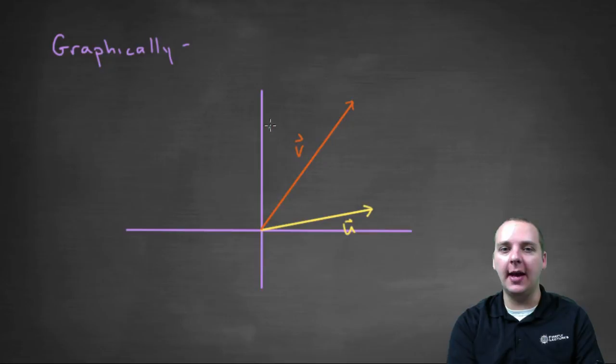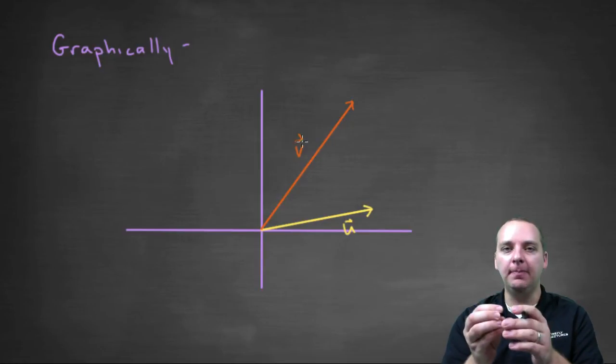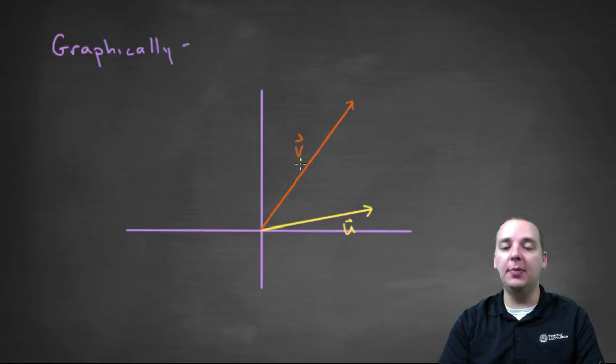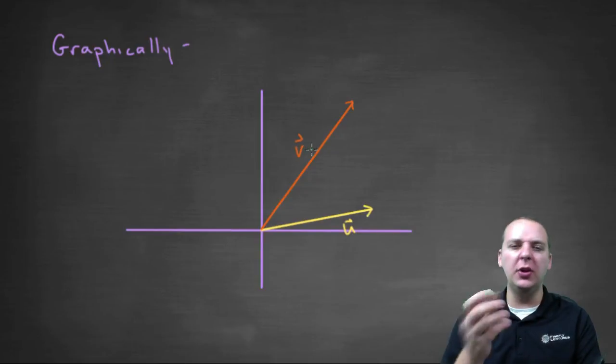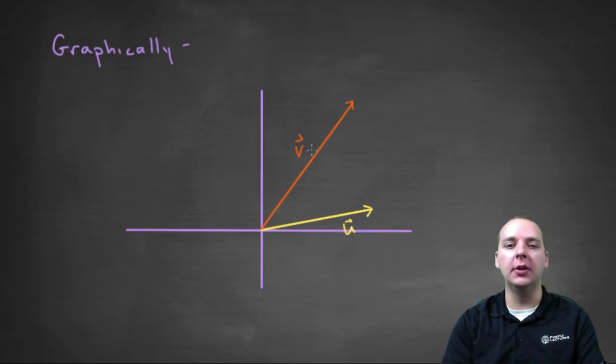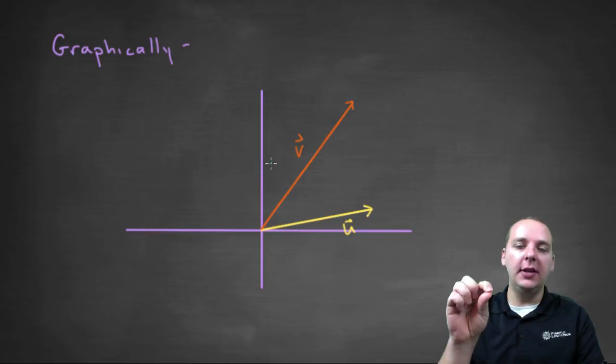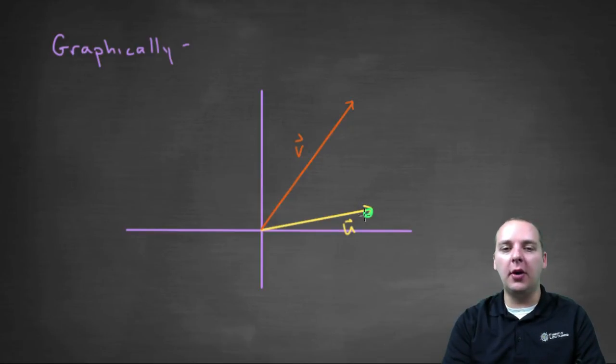Well this is not that much different. If you took v, and remember v can be drawn anywhere. We normally draw it starting at the origin, but it doesn't have to be started at the origin. You can start v where u leaves off, and then keep drawing. That's certainly allowed. So if you did that, it would look something kind of like this.